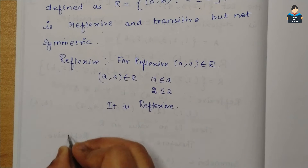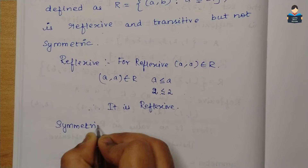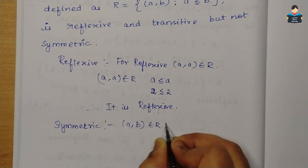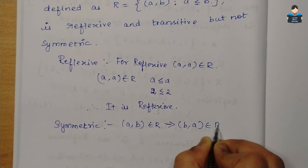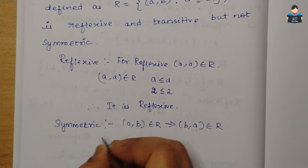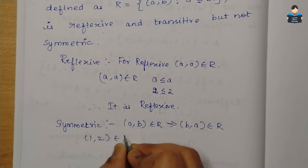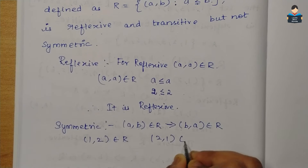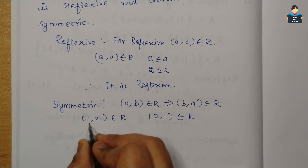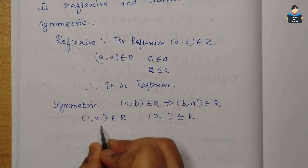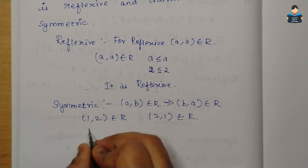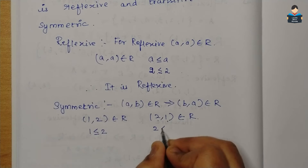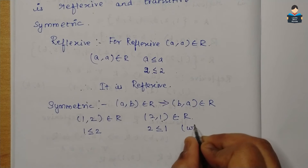Next is symmetric. The condition for symmetric is: if (a,b) belongs to R, this implies (b,a) belongs to R. Now, (1,2) belongs to R implies (2,1) should also belong to R. We check: 1 is less than or equal to 2 — condition satisfied.